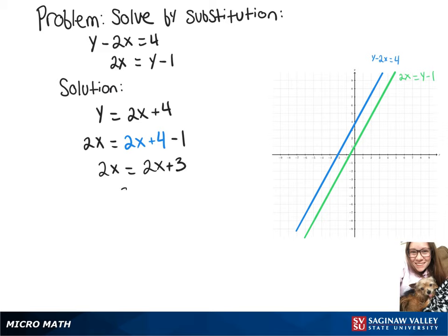Subtracting 2x from both sides gives us 0 equals 3, but that doesn't make any sense because 0 doesn't equal 3. So we're going to have no solution to this system.